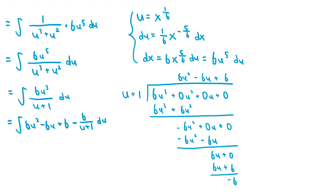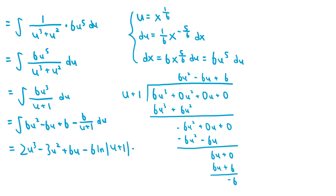Now the integrand is a sum of a polynomial and a rational function, and we can do the integrals separately. The integral of 6u squared minus 6u plus 6 is 2u cubed minus 3u squared plus 6u. And the integral of negative 6 over u plus 1 is negative 6 times ln of the absolute value of u plus 1. Then we add a constant c.